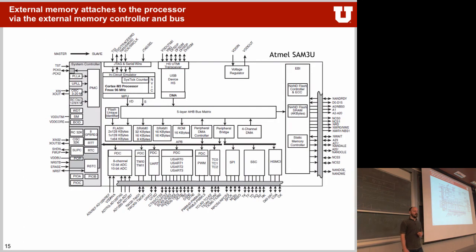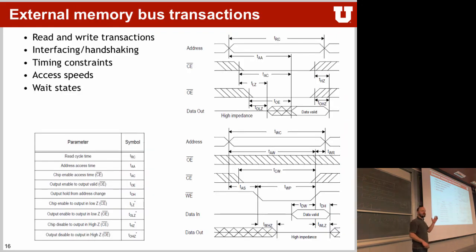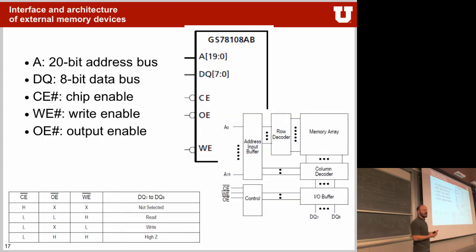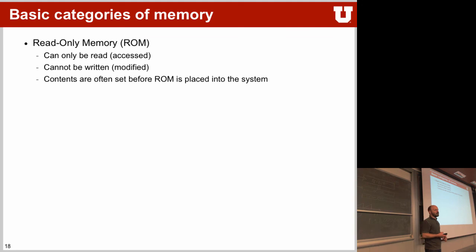Now for memory technologies — we saw the memory landscape before where we had different interfaces. We talked about bus transactions, read and write, address bits, data bits, chip enable bits. The big question now is: what's inside the memory? There are two broad categories: read-only memory, or ROM — you cannot write back to it — and random-access memory, or RAM, which is typically both readable and writable.